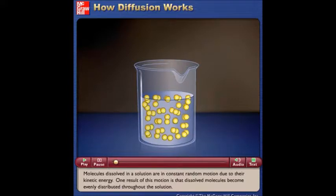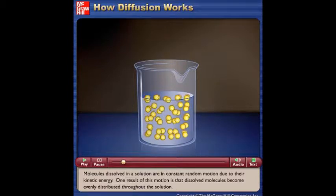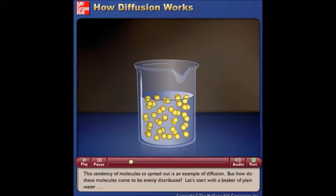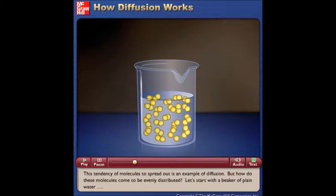Molecules dissolved in a solution are in constant random motion due to their kinetic energy. One result of this motion is that dissolved molecules become evenly distributed throughout the solution. This tendency of molecules to spread out is an example of diffusion.